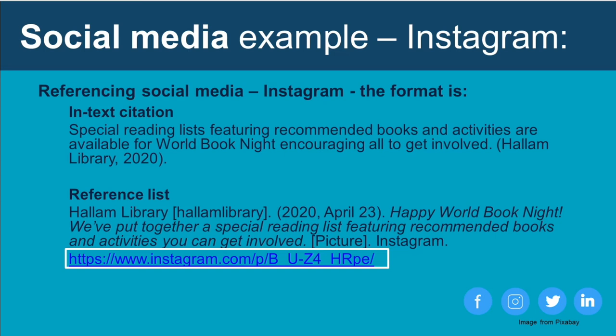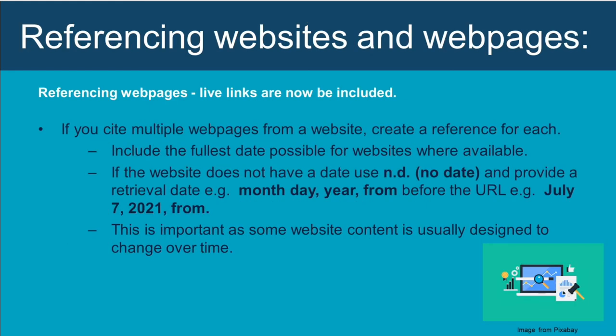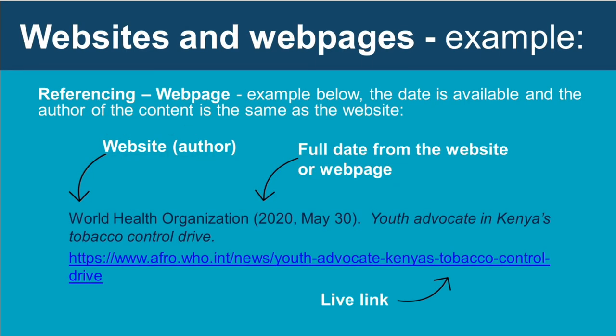For websites, if you cite multiple pages include a separate reference for each one. Include the full URL where possible. If the website does not have a date, use 'n.d.' (no date) and provide a retrieval date. Include the full date if available — so in your in-text citation put the year, and in your reference list put the full date.